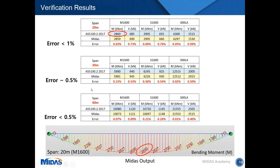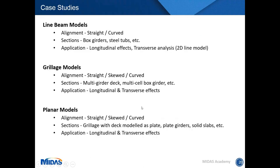The case studies are divided into three parts. First, line beam models — typically used for box girders, steel tubs, or other box structures, mainly to calculate longitudinal effects. Second, grillage models — used to calculate effects for multi-girder or multi-cell box girders, giving both longitudinal and transverse effects. Third, planar or shell models — where a grillage is built with a deck modeled as plate elements and girders as beam elements, or for solid slabs and plate girders.